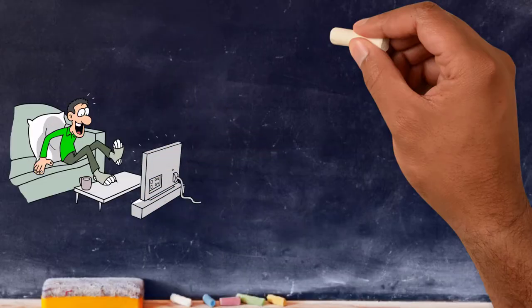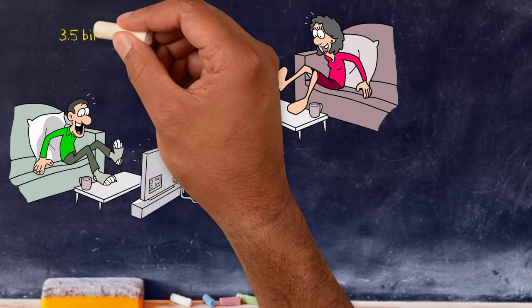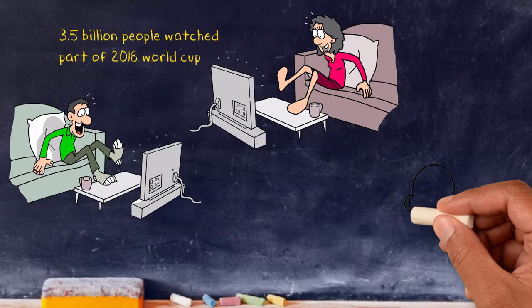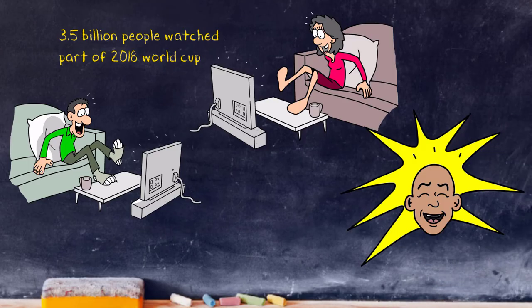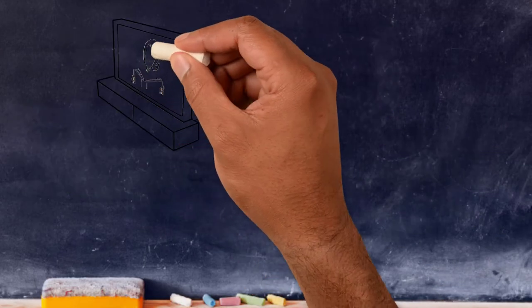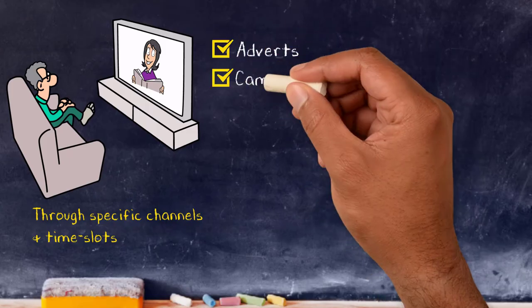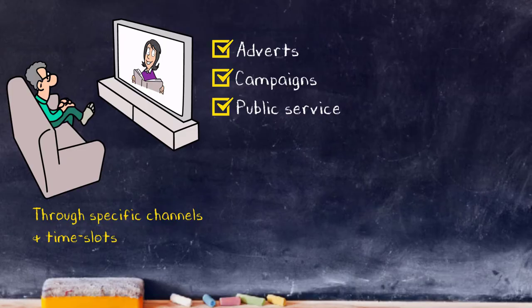Television reaches a huge number of people. According to FIFA, 3.5 billion people watched part of the 2018 World Cup. Never mind Gogglebox, it's mind-boggling. Using TV as a medium means you can target your audience through specific channels and time slots. Adverts, campaigns and public service all thrive in TV.